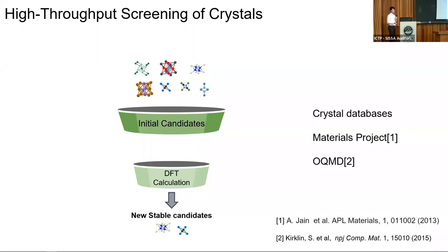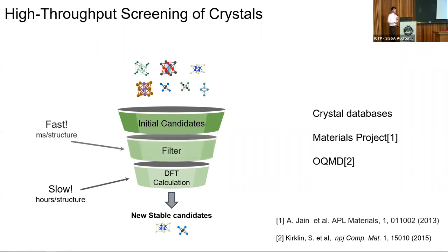However, the problem with this approach of only doing DFT is that it is generally very slow. It can take several hours to calculate the property for a single crystal structure. So what you typically want is some initial filter to screen out structures that are actually relevant or likely to be relevant for further evaluation.